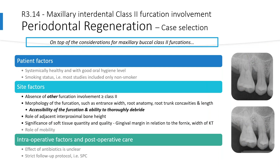For periodontal regeneration in maxillary interdental class 2 regions, in addition to considerations already mentioned for maxillary buccal class 2 furcations, site factors of particular concern include the absence of other furcation involvement greater than or equal to class 2 in the same tooth, and the morphology of the furcation — entrance width, root anatomy, root trunk concavities, and length — which affects accessibility and the ability to thoroughly debride the furcation. We especially highlight the role of adjacent interproximal bone height and soft tissue level because of our inability to coronally advance the tissues in these sites.